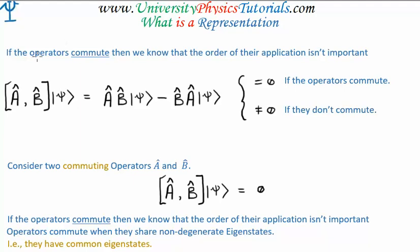We know that if quantum operators commute, the order of their application is not important. Consider arbitrary operators A and B acting on generic quantum state psi. If the commutator is zero, the operators commute; if non-zero, they don't. For two commuting operators A and B — similar to energy and momentum — the order of application onto a quantum state vector isn't important. Furthermore, if the operators commute, they share non-degenerate eigenstates. Degenerate eigenstates are more complex, but for non-degenerate cases, commuting operators essentially have common eigenstates.